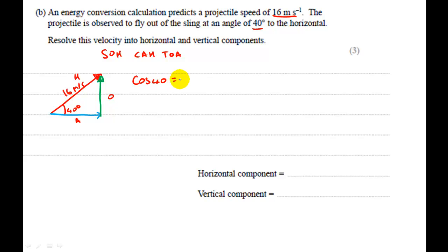Cos 40 will be equal to a over h. And I want to find a, so I've multiplied by h both sides, so it's just going to be 16 cos 40 will give me, and I'll just quickly calculate that, 16 cos 40 gives me 12.25 meters per second.